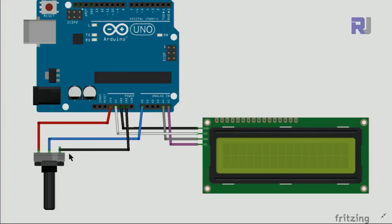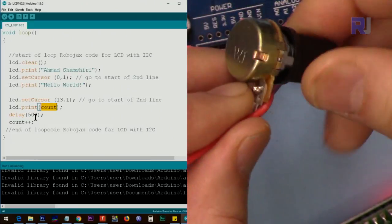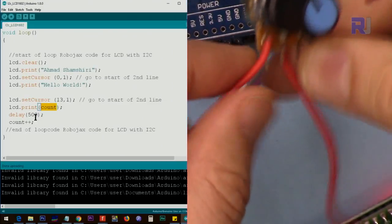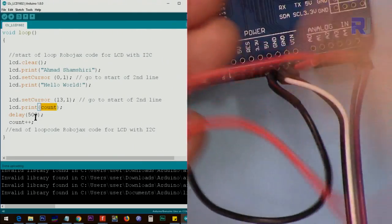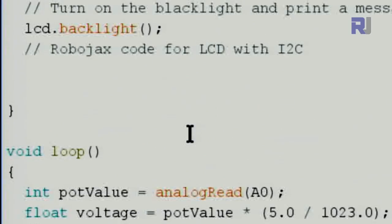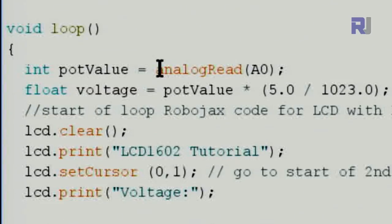Now I'm connecting a potentiometer, which is a variable resistor. One wire connects to 3.3 volts (instead of 5V, since the display uses that), the other side to ground, and the middle pin to analog pin A0. Rotating the potentiometer changes the voltage at A0. I'm connecting the left wire to ground, the right to 3.3 volts, and the middle wire to A0.